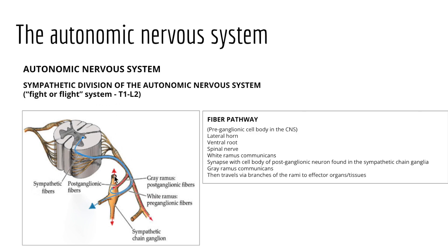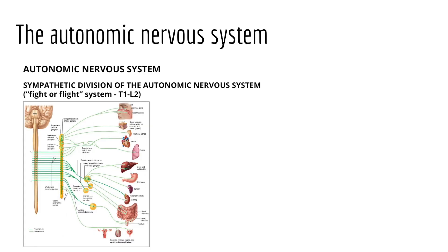There are some additional pathways worth noting. A preganglionic fiber might travel out and up or down to another bead-like ganglia structure before synapsing. On occasion, as we'll see with the adrenal gland, the preganglionic fiber heads through the sympathetic chain ganglia without synapsing at all. Looking at the big picture, we see preganglionic fibers, points of synapse, and postganglionic fibers moving out to innervate effectors — with most ganglia near the spine, but some found more distally.